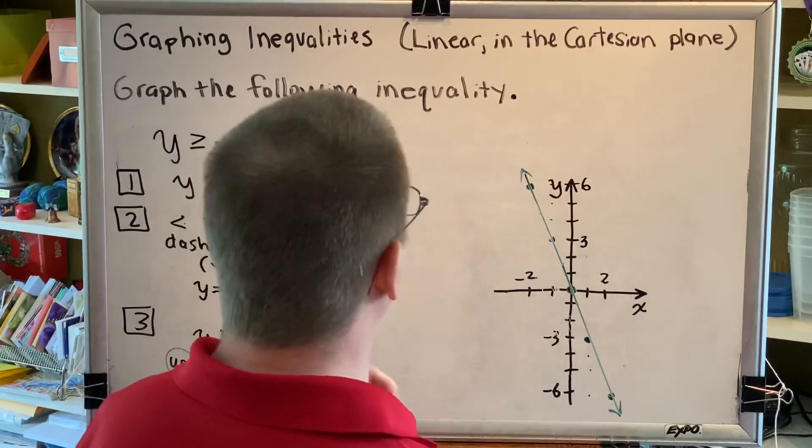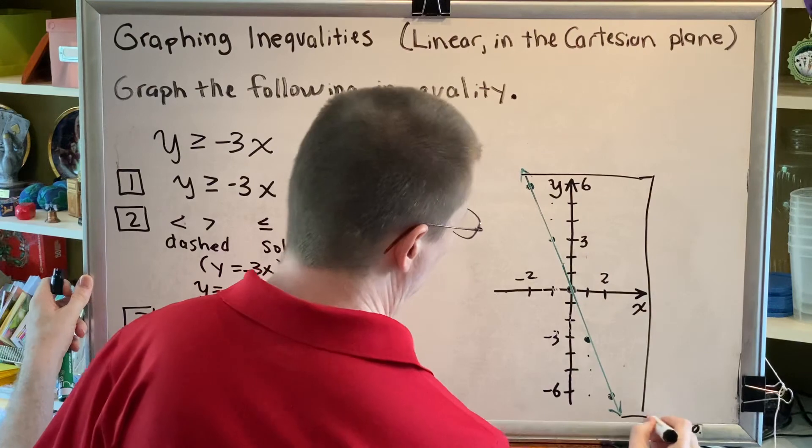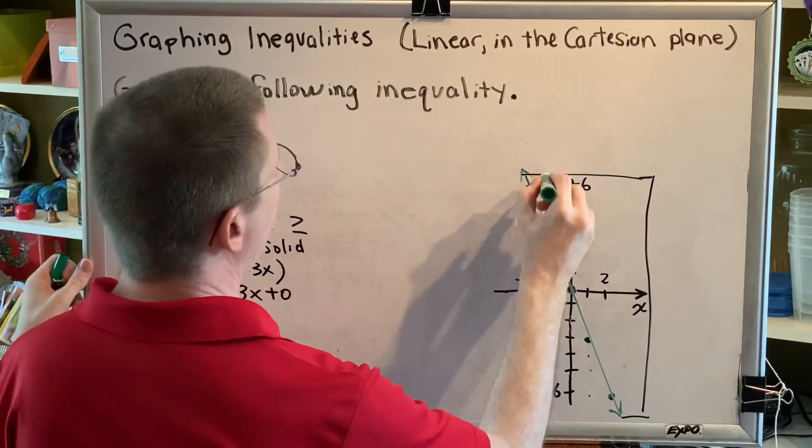So go ahead and box in your graph. And then from the green solid line, shade up.